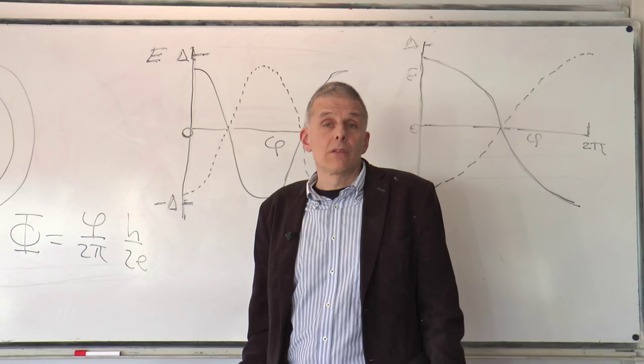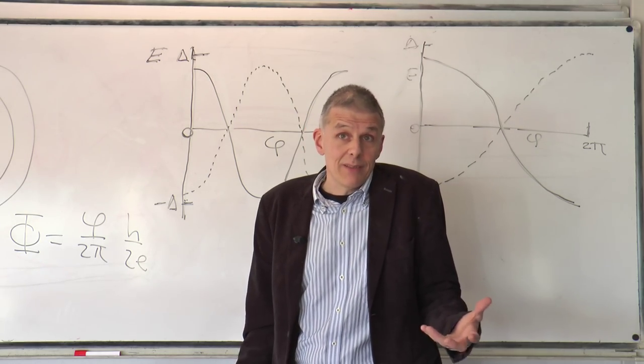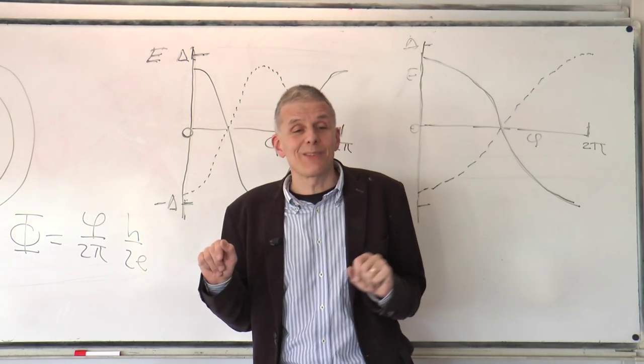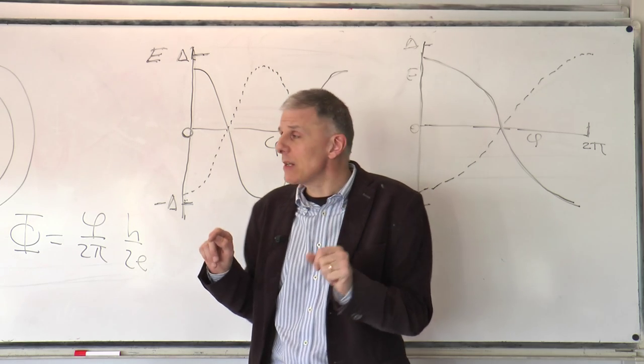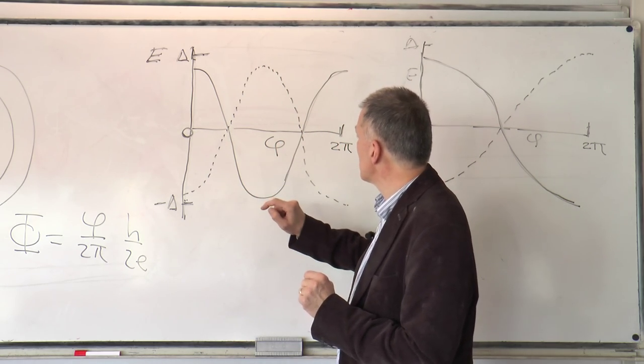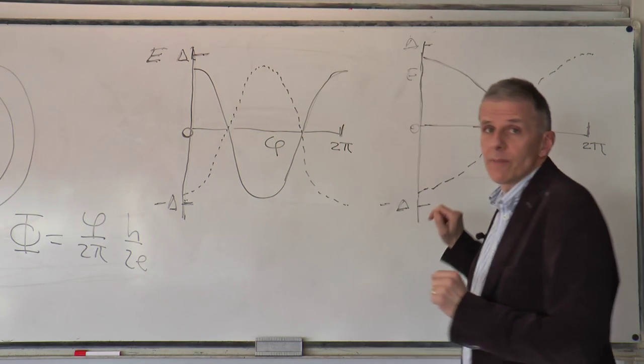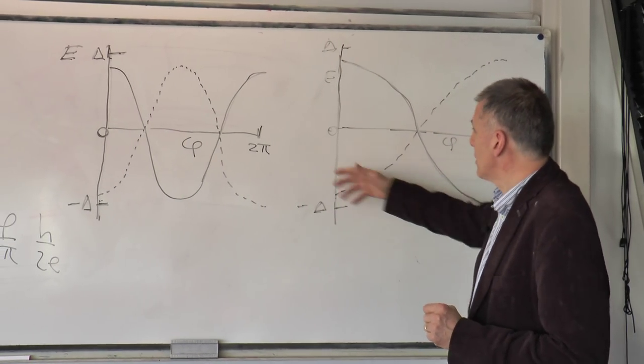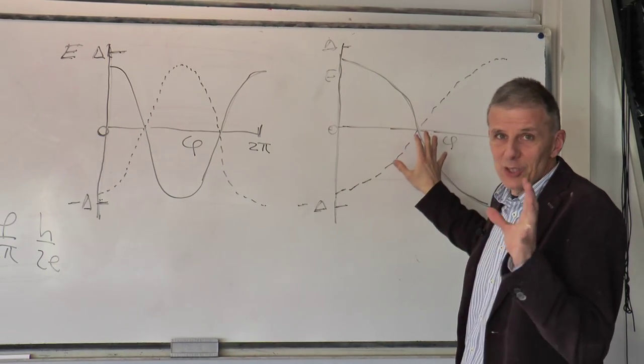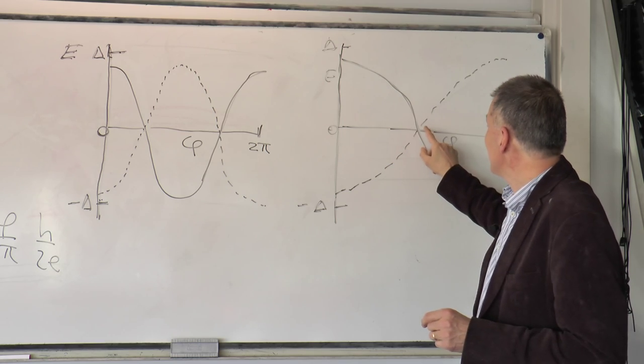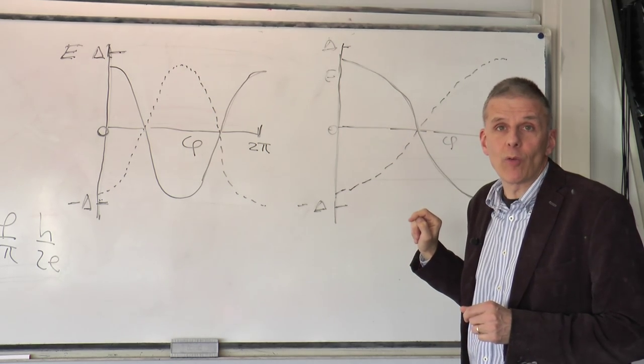But now there is certainly another mathematical possibility, whether it is realized in nature, that is of course the next thing to think about. But certainly mathematically it is possible that the spectrum does not look like this, but looks like this. So what is the difference? It looks different, but the topological difference is that this has an odd number of level crossings. One.